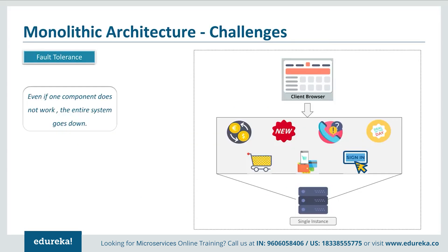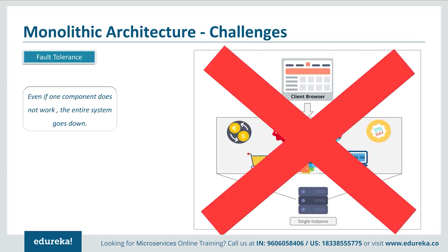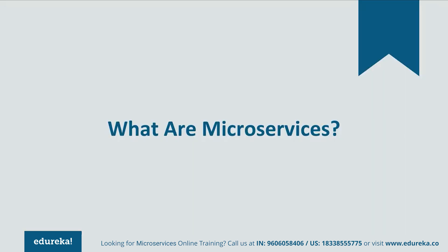Let us now look into the third challenge which is fault tolerance. Consider your shopping cart application — even if one feature of the application doesn't work, the entire system goes down. This not only creates a problem for the users, but also for the developers as they have to rebuild it again. So to avoid these challenges, developers decided to shift from monolithic architecture to microservices.